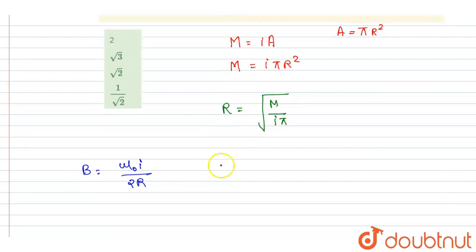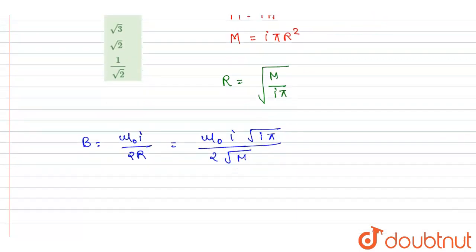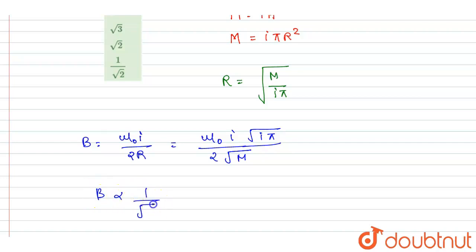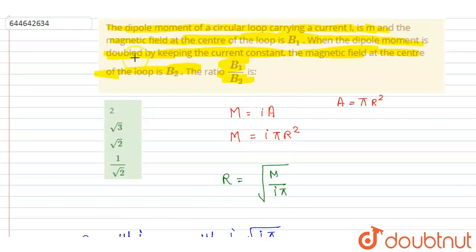You can put the value of r now. So you can see the magnetic field is inversely related with the square root of M if I is constant. And it is said that the current is constant, and the dipole moment is doubled.